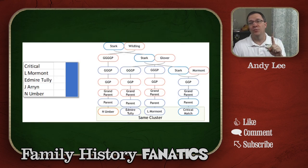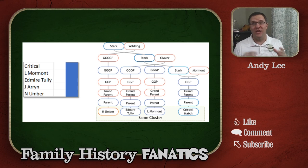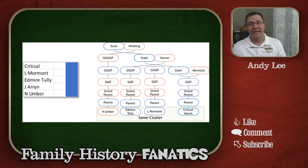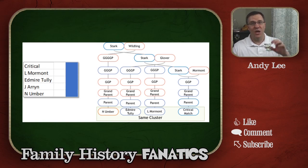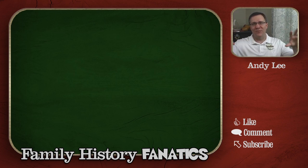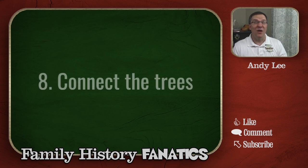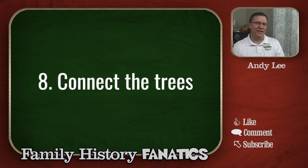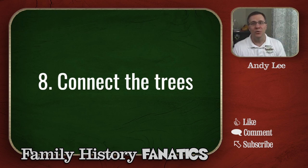We did that for just one group — now we want to do that for the other groups as well. For the blue group, we find and build trees out, and in this case we have four different matches that are all part of this group, built back several generations. Once we've done that with all the different groups, we're ready for the next step: we've created several trees for all of our matches, and we want to connect all of these trees, because where they connect is where we fit into the overall picture.